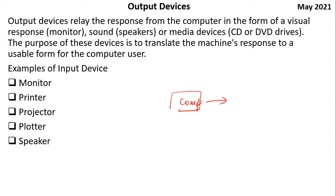The response could be any visual response. If you want to see it on a very big screen, you use a projector. There is also an output device called a plotter. There is a speaker, which is used to hear sound. So output from the computer — whatever is the result, when you want to see the result, you see it through the output devices. It is the opposite of input devices.